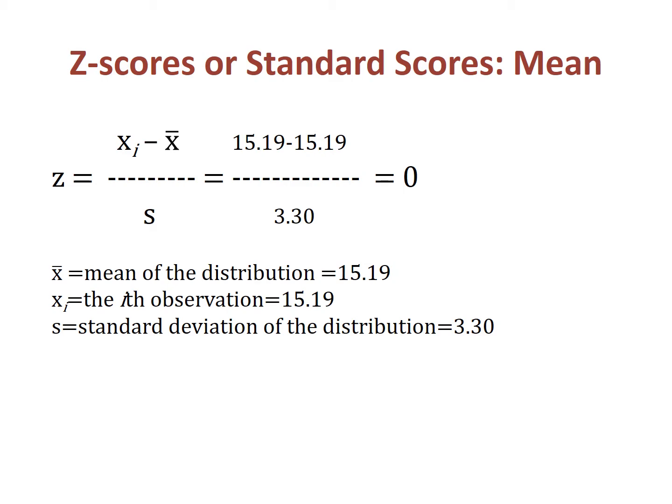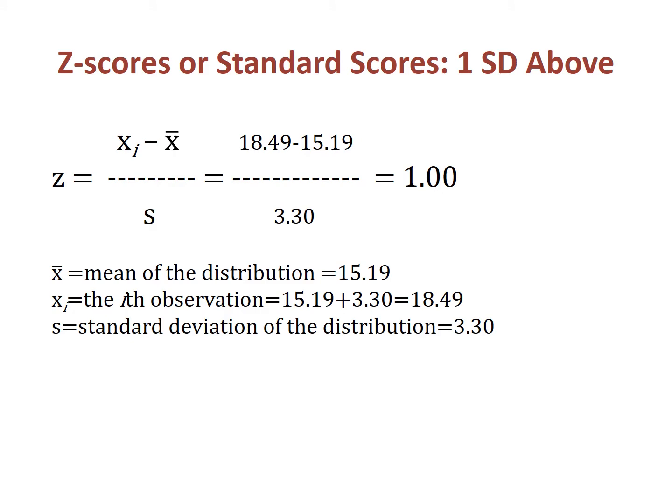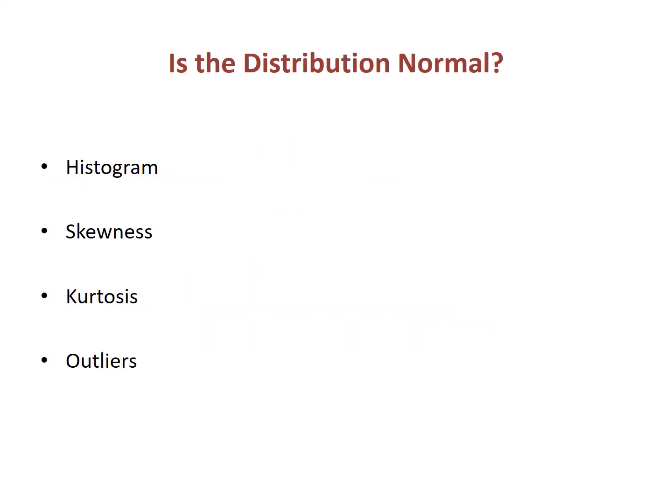The mean of the distribution has a z-score of zero. The z-score of a point one standard deviation above the mean is one, and the z-score of a point one standard deviation below the mean is minus one. All this information is useful, but we have yet to address a key question: is the distribution of points normal?